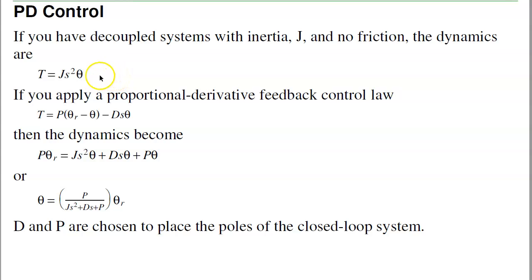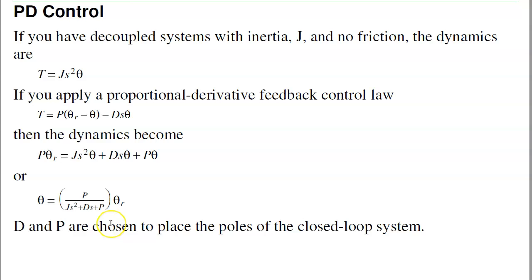Essentially each motor looks like it has inertia, and ignoring the other terms, the torque is inertia times angular acceleration. If I use a PD feedback control law, then I wind up with this differential equation. The roots of J·s² + D·s + P tell you how the system will behave — the real part tells you the settling time, the complex part tells you how it oscillates. That's your PD control law: choosing P and D to specify the poles of the closed-loop system.